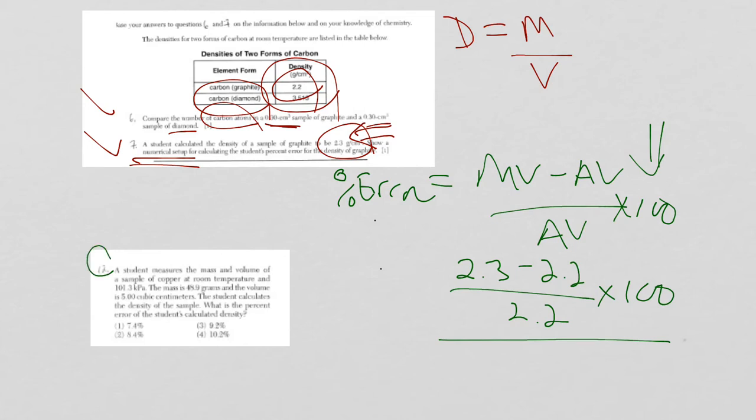Okay, question 12. Student measures mass and volume of a sample of copper at room temp and 101.3 kilopascal. Mass is 78.9 grams, volume of 5 cubic centimeters. Student calculates the density. What is the percent error of this student's calculated density? Okay, so again, percent error. We have the equation already written here.